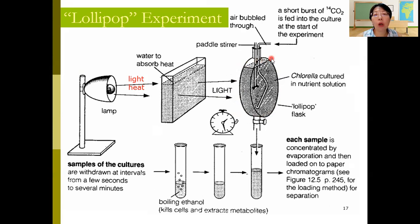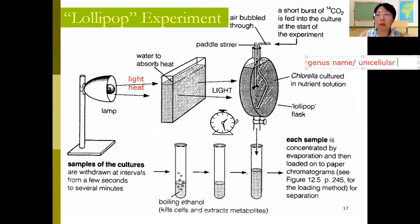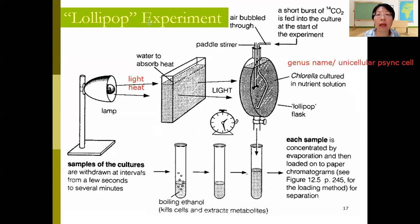Inside the lollipop flask, we need cells that photosynthesize. They used a unicellular photosynthetic cell called Chlorella — it's a genus name. Chlorella is a unicellular photosynthetic organism that contains chloroplasts to photosynthesize.